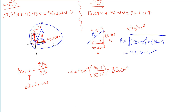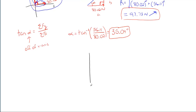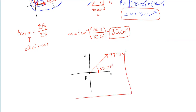So in total, drawing a picture at the end helps. You have the resultant, its magnitude, its direction — and now the angle at which the resultant is acting. If you draw it on a coordinate system with your X and Y axis and point A at the origin, your resultant would be 97.37 newtons at an angle of 35.04 degrees off of the X axis. That is your overall final answer for this problem.